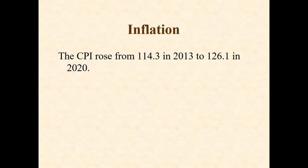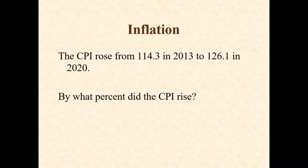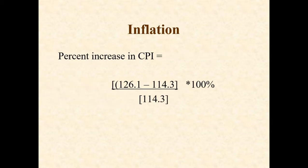With the understanding you've got, try this one: the CPI rose from 114.3 in 2013 to 126.1 in 2020. Give it a try — by what percentage did the CPI rise? The formula is: the most current minus the previous, divided by the previous, times 100%.